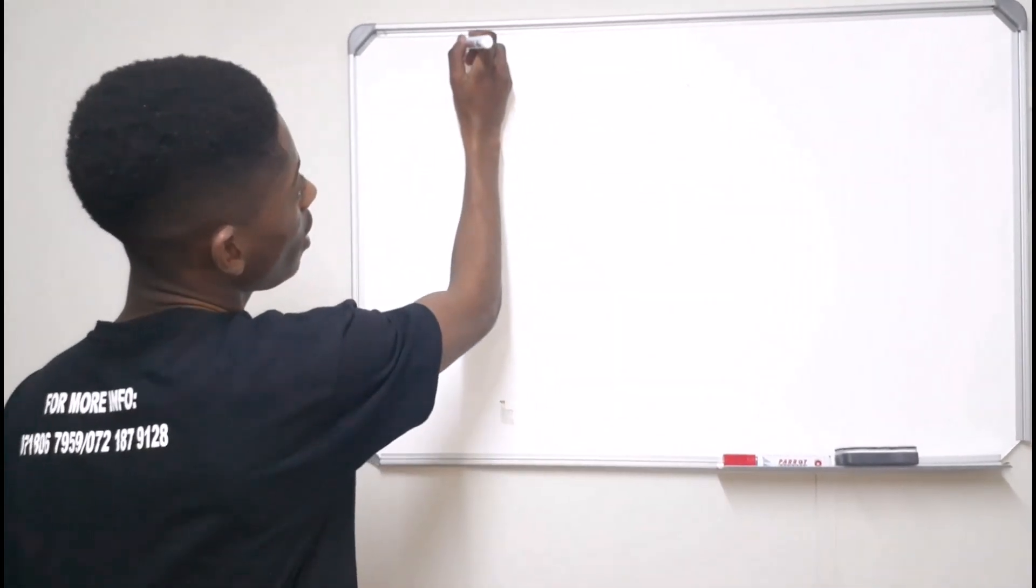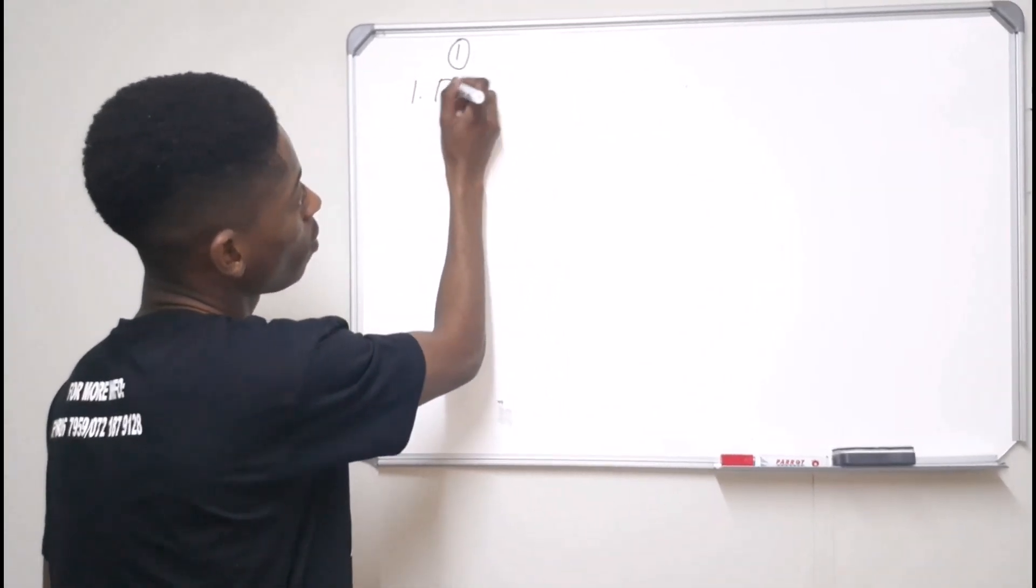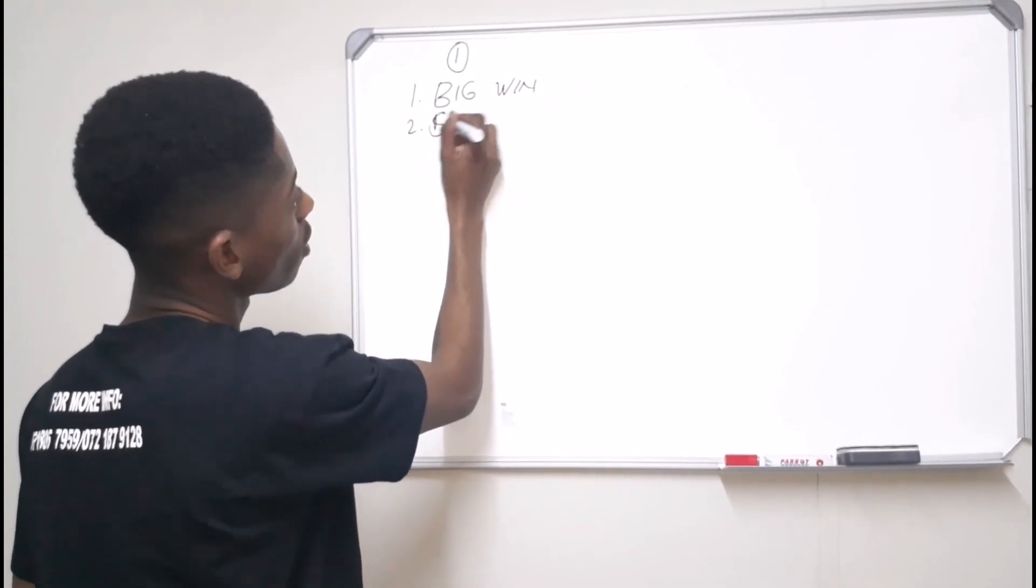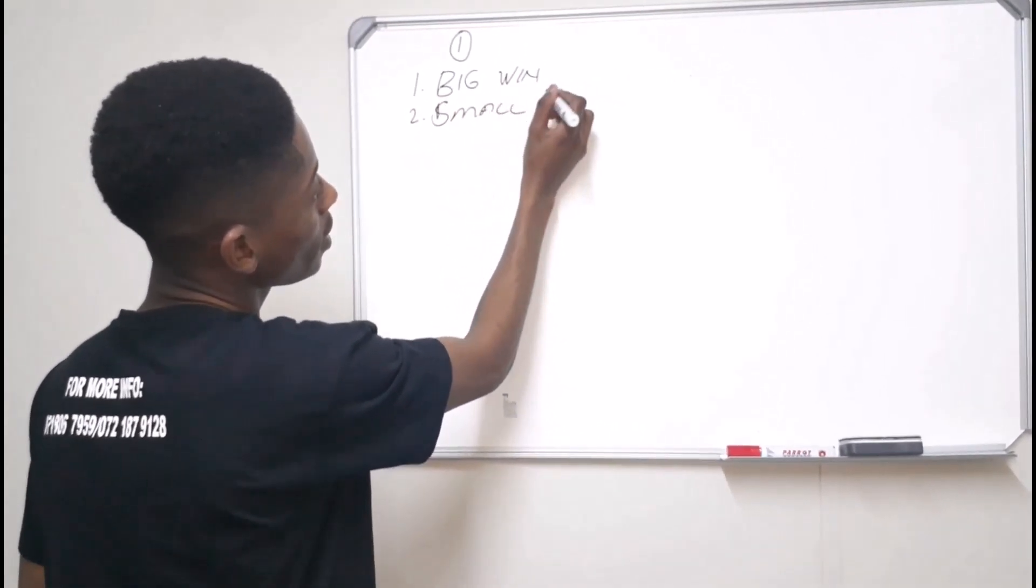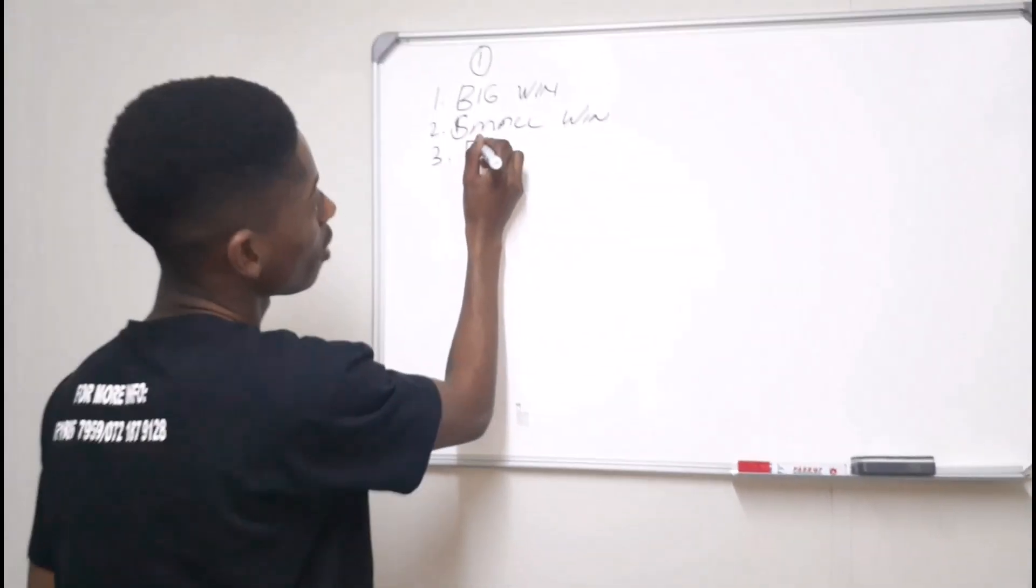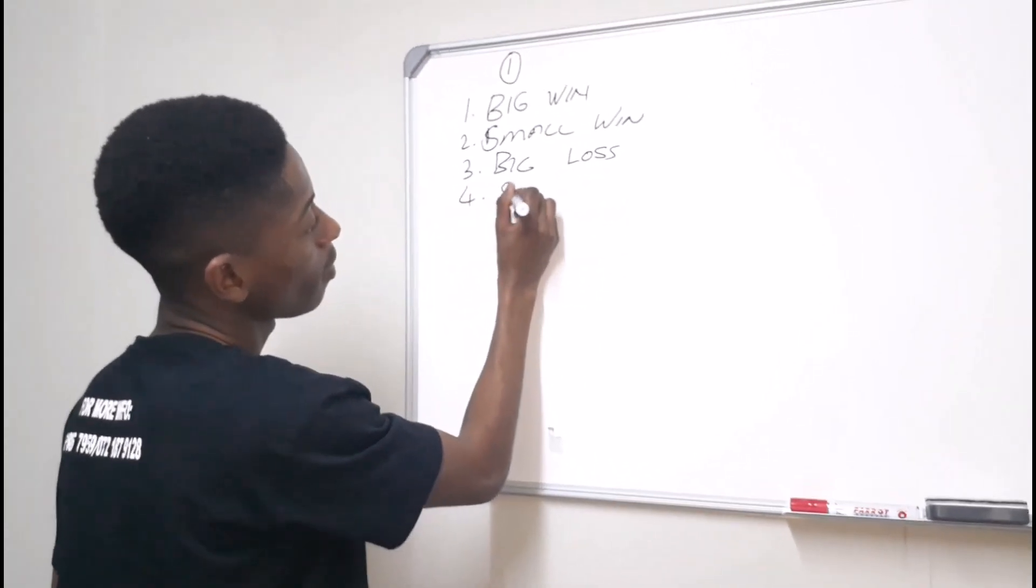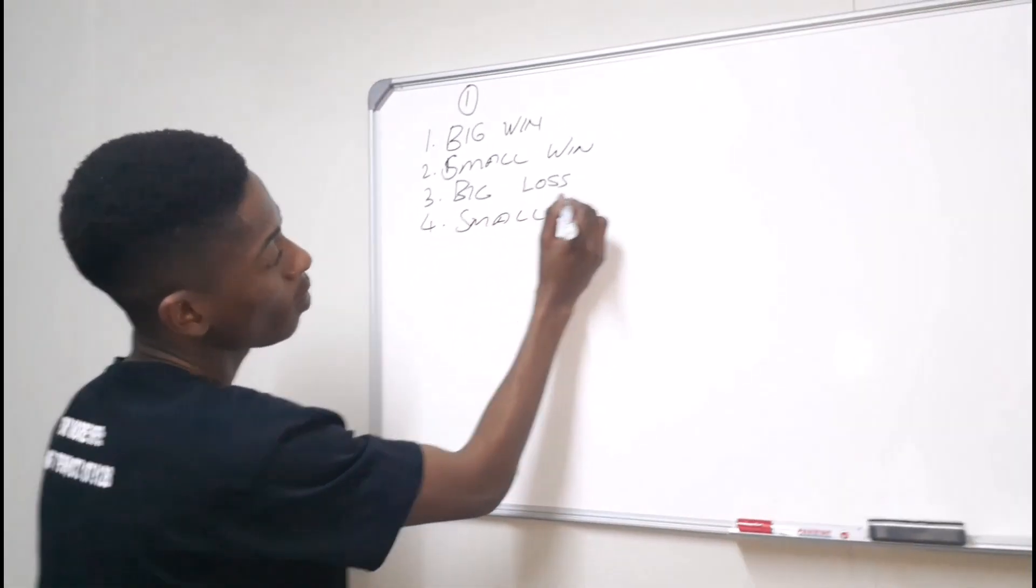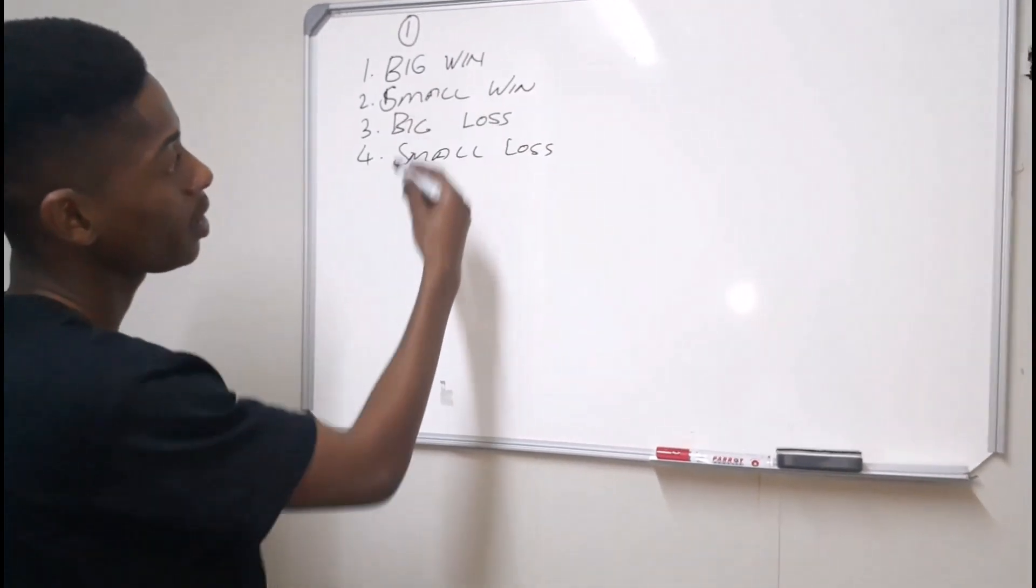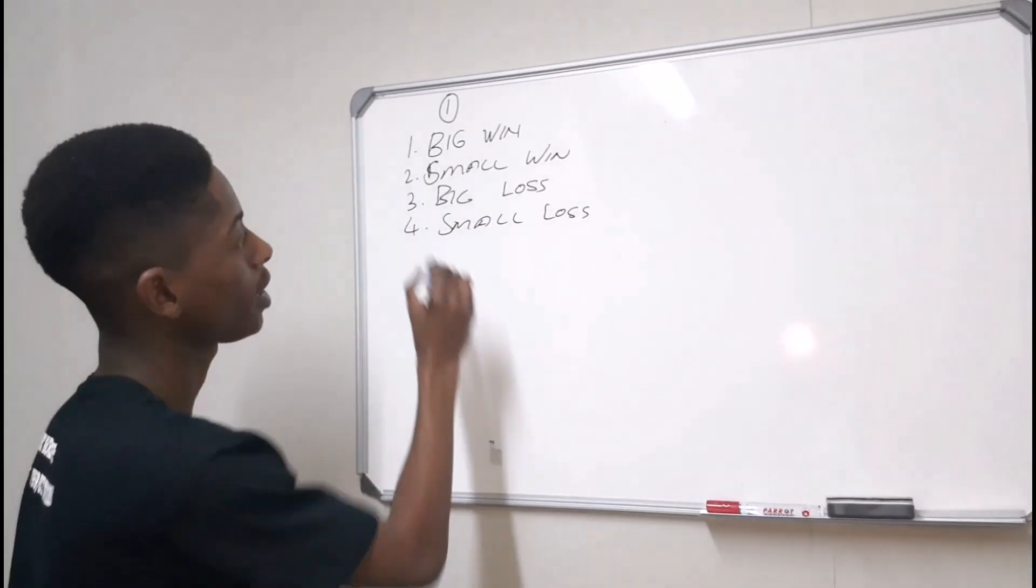If you take a look at it, you have a big win and you have a small win. With that being said, it means that you have a big loss and a small loss. Now with this, I'm going to show you what it does to your equity curve. All these things are what you get in the market, but all you have to do is just cut off one, which is cut off the big loss.